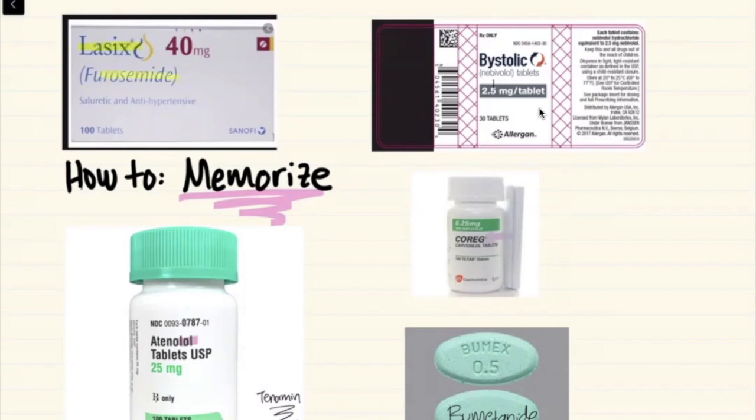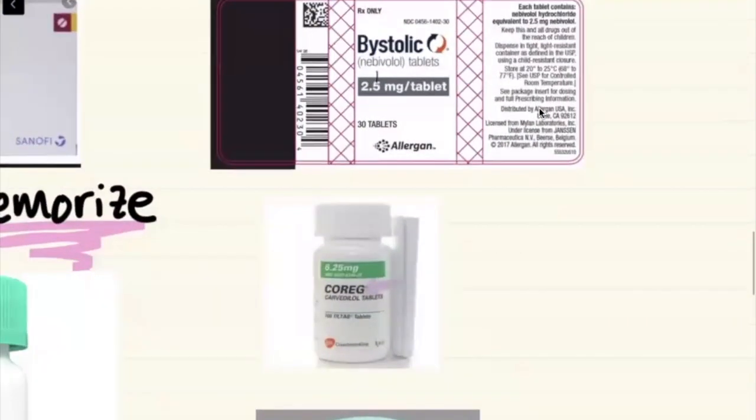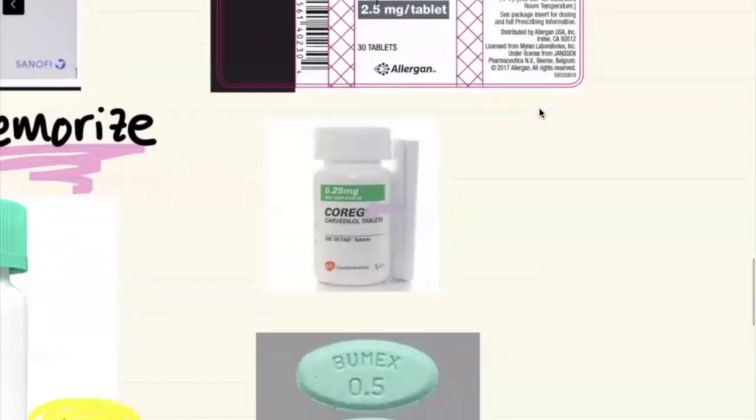So when I see these together, I'm going to start memorizing that furosemide's brand name is Lasix, it's a loop diuretic, and it's an antihypertensive. Here I see atenolol, so now I can test myself atenolol is Tenormin. Here we have Bystolic, which is another beta blocker nebivolol, and I know that its drug class is beta blocker and it's also an antihypertensive. Coreg is another beta blocker which is another antihypertensive medication, and I remember carvedilol has the brand name that also starts with a C, so CC carvedilol Coreg.